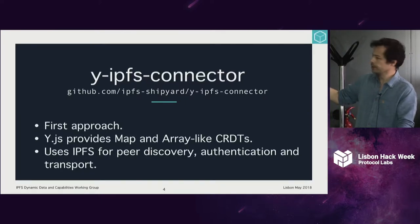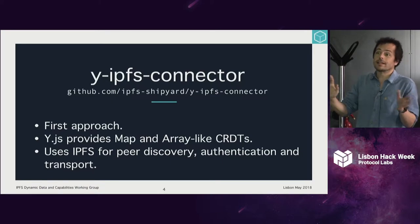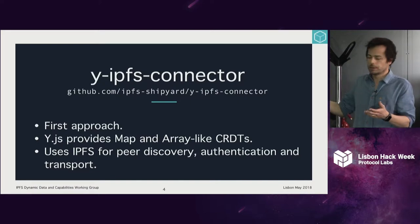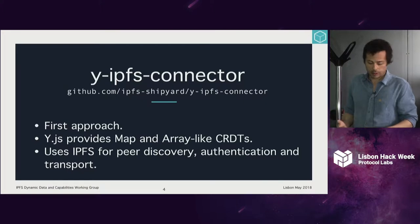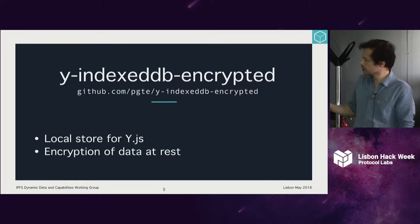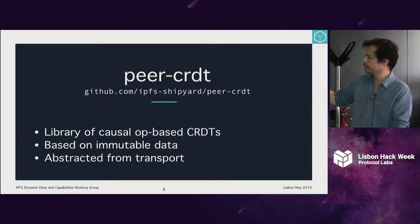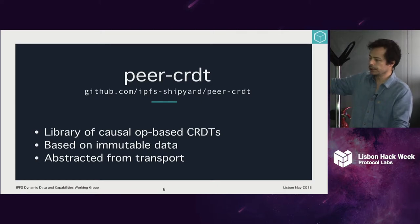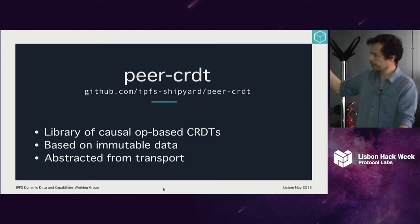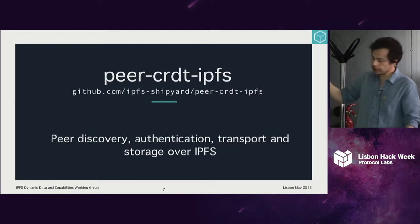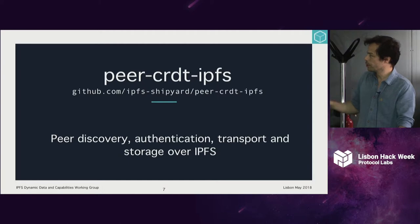There's a bunch of open source that we have published — connectors for well-known CRDT libraries in JavaScript. Mainly the work that we are doing is JavaScript-based because we want to enable decentralized web applications to be developed. There's stuff that guarantees encryption at rest for operation-based CRDTs, PeerCRDTs — a library for causal op-based CRDTs. They're based on immutable data, so it kind of fits well in the IPFS model, with transport for that through the IPFS network.